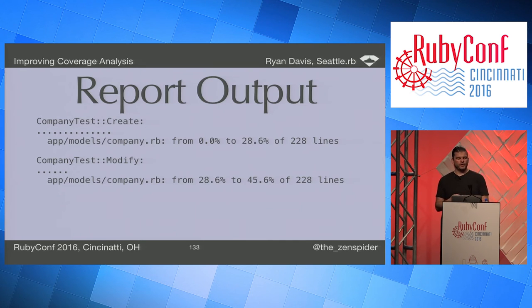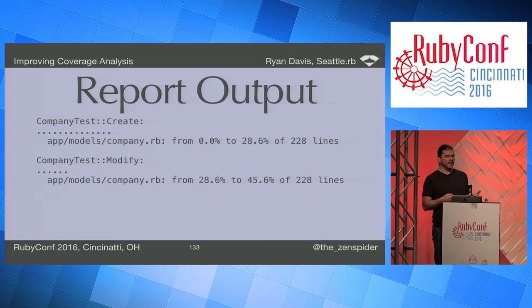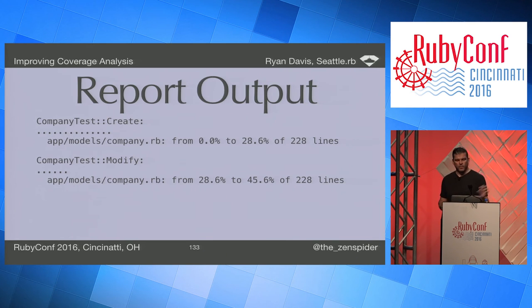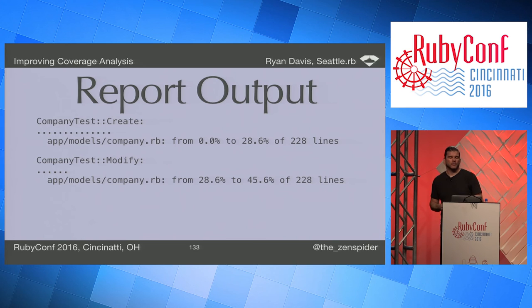Minitest coverage also changes the runner to show each test class and report progress on each one. This makes Type 2 errors much more obvious, because it'll say that it can't map a class, and you'll see the percentage difference as it goes.